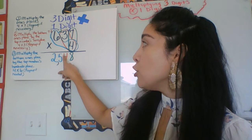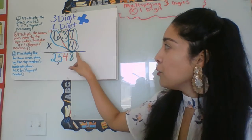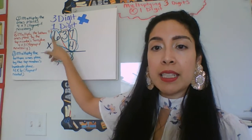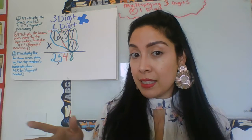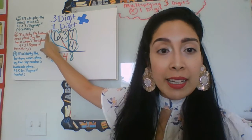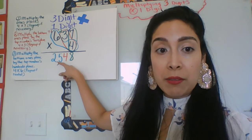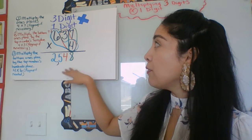Drop the four, regroup a one. Okay, continuing on, we have four times six. Four times six is 24 plus one that I regrouped.